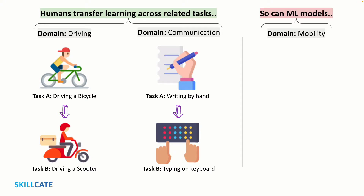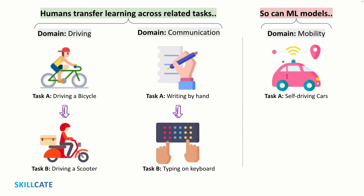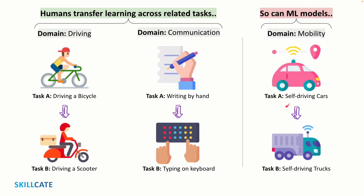In the context of machines, transfer learning is storing knowledge gained solving one problem and applying it to a different but related problem. A typical example would be to reuse a model trained for autonomous driving of cars for a related task of autonomous driving of trucks, with some fine-tuning to account for the vehicle size and weight.